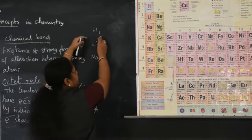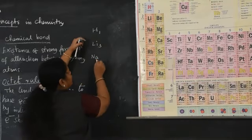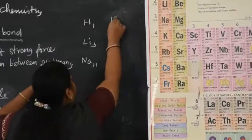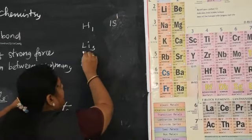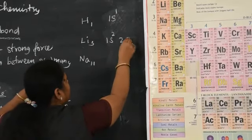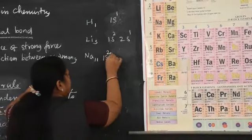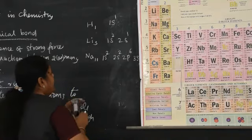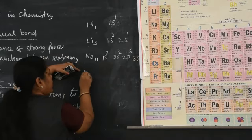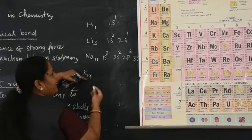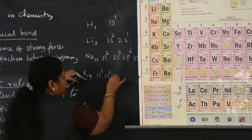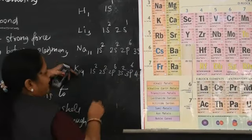Atomic number of hydrogen is 1 → 1s¹. Lithium is 3 → 1s², 2s¹. Sodium is 11 → 1s², 2s², 2p⁶, 3s¹. Potassium, atomic number 19 → 1s², 2s², 2p⁶, 3s², 3p⁶, 4s¹. In each case, the last electron enters an S orbital.